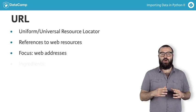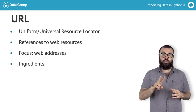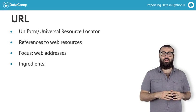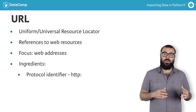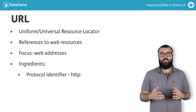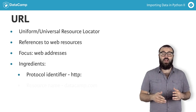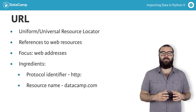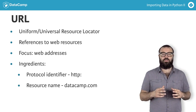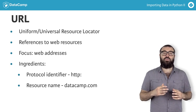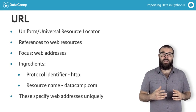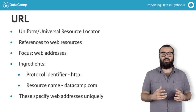Such a URL consists of two parts: a protocol identifier — HTTP or HTTPS — and a resource name, such as datacamp.com. The combination of protocol identifier and resource name uniquely specifies the web address.